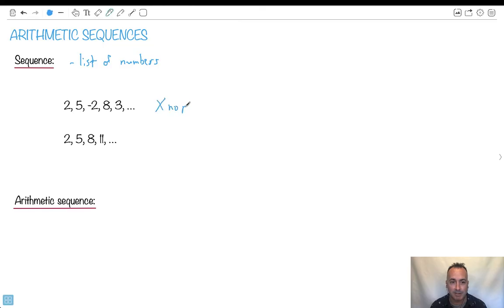So this is actually pretty boring, right? This is not a special kind of sequence. It's just a generic sequence. Let's see this one here: 2, 5, 8, 11. Can you find the pattern here?